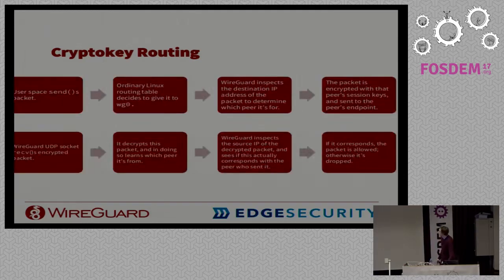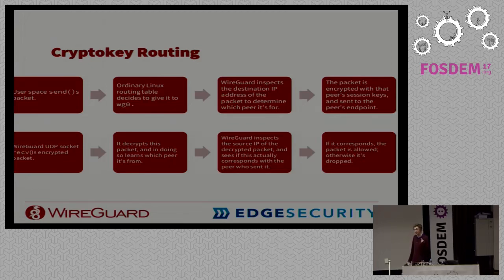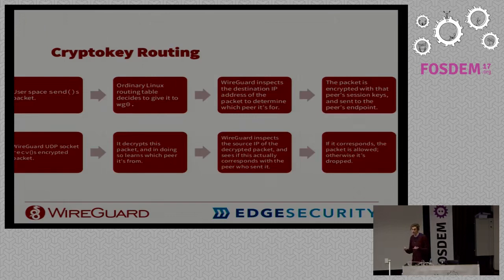At the API level, user space sends a packet using the send syscall, then the ordinary Linux networking layer decides the packet should go to the WG0 interface. WireGuard looks at the destination IP address and finds which public key it corresponds to, looks up the current session for that key, encrypts the packet, and sends it to the endpoint. In the reverse direction, when the UDP socket receives an encrypted packet, it decrypts it, identifies the public key, inspects the source IP of the decrypted packet, checks whether that public key is allowed to send as that source IP — if yes, it goes onto the interface; if not, it's dropped.